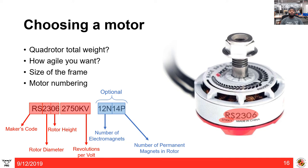Now let's talk about motor naming conventions. You'll see two numbers like 'RS2306' and '2750 kV.' The first two letters are the maker's code — for example, 'RS' stands for racing from EMAX. The next two digits (23) are the rotor diameter, and the following two (06) are the rotor height, both in millimeters. '2750 kV' means the motor provides 2750 RPM per volt. Some high-quality motors also specify the number of electromagnets and permanent magnets in the rotor.